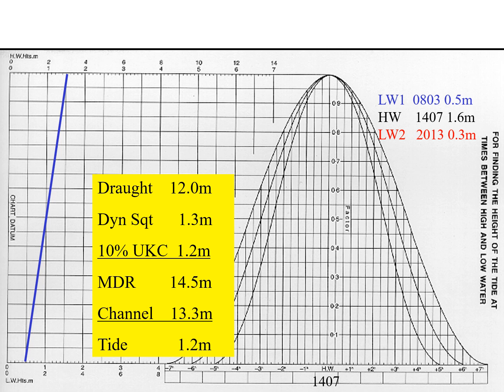Since our required height of tide is 1.2 meters, we draw a perpendicular line at 1.2 meters on that same scale — that is the black line. Wherever it intersects the blue line, we draw a horizontal line across to the curves. The center of the curves has 'high water' marked at the bottom, corresponding to our high water time of 1407.